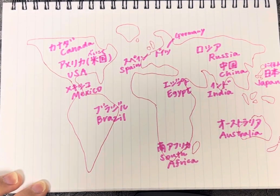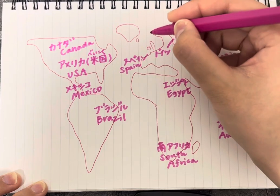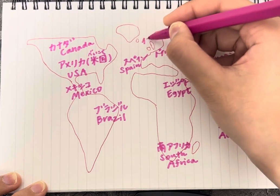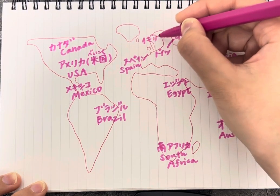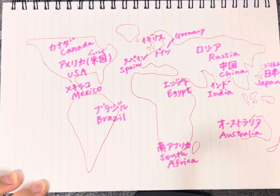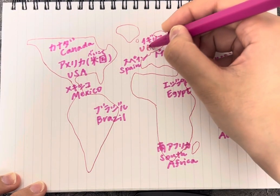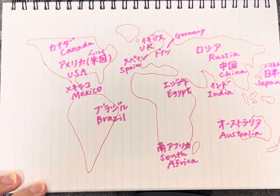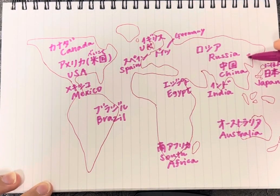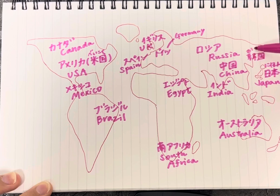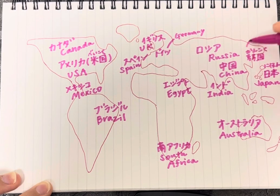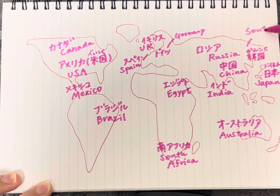South Africa is 南アフリカ (Minami-Afurika). The UK is イギリス (Igirisu). South Korea is 韓国 (Kankoku).